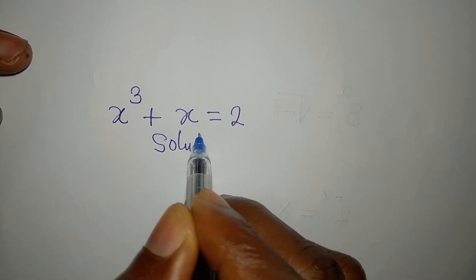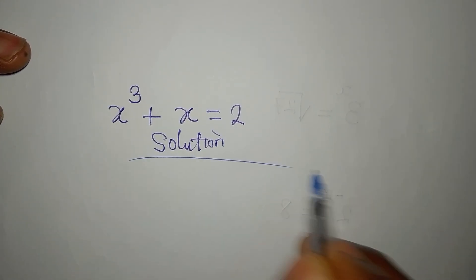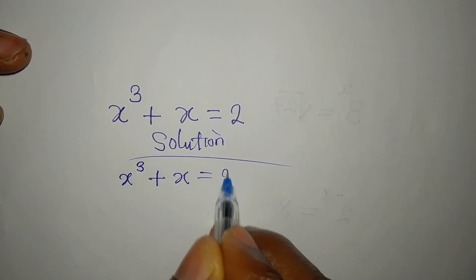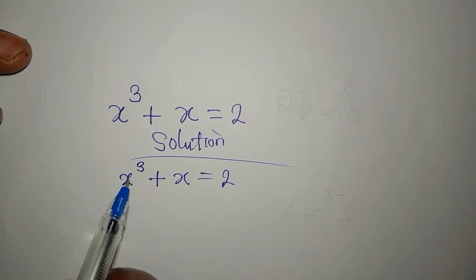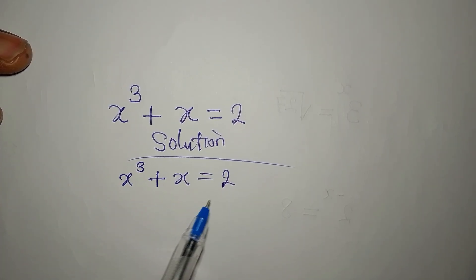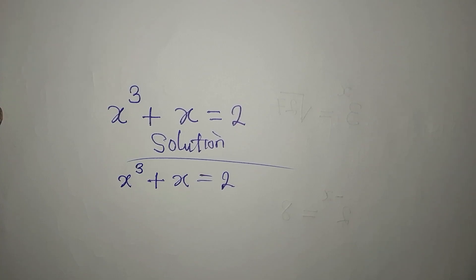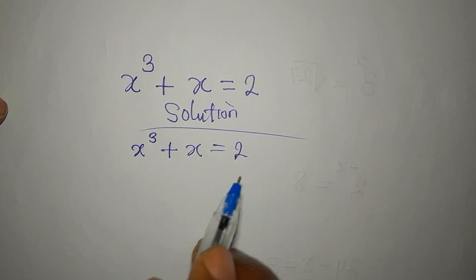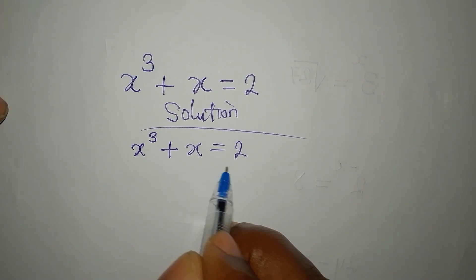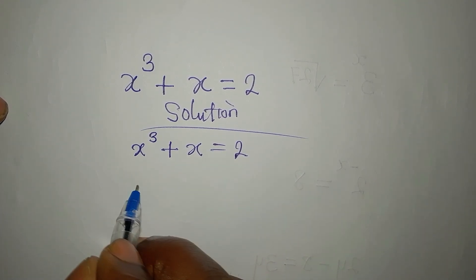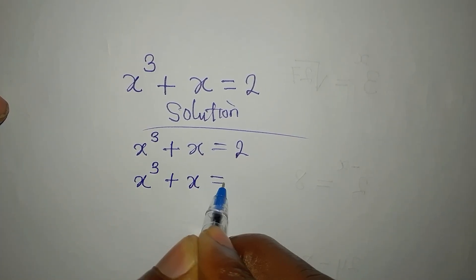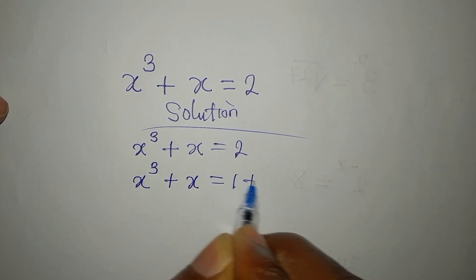Hi everyone, welcome to Feel Cool Mathematics. Today we have x to the power of 3 plus x equals 2. The first thing to recognize is that 2 can be written as 1 plus 1, so we have x³ + x = 1 + 1.